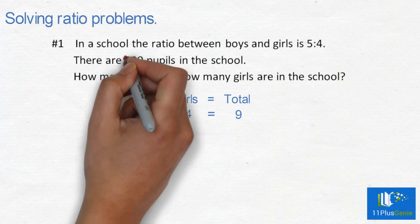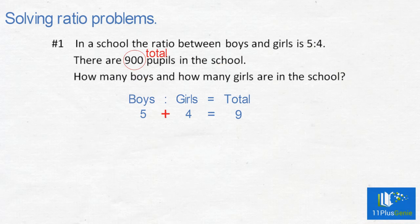There is a total of 900 pupils, so we write this 900 underneath the total. We must times 9 with 100 to get 900.